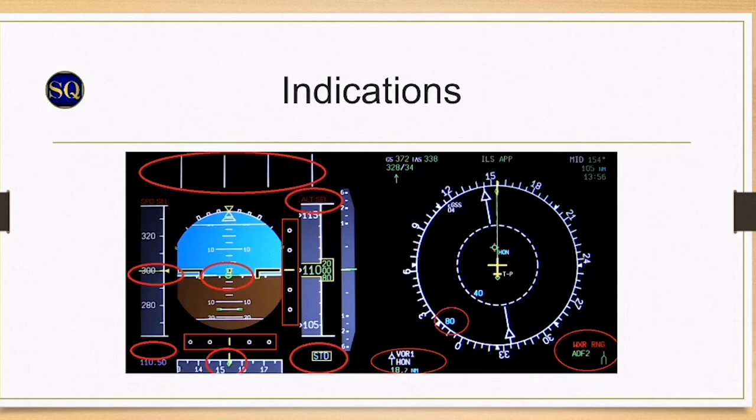On both NDs, ROSE NAV at 80 nautical mile range will be displayed. Needle 1 shows VOR1 and Needle 2 shows ADF1 or ADF2 depending on the aircraft installation.